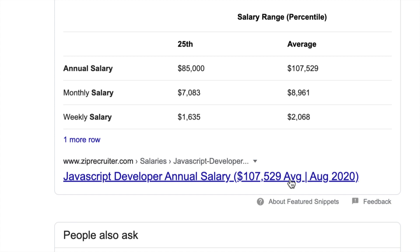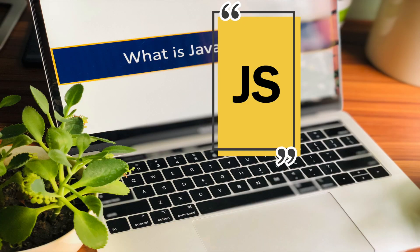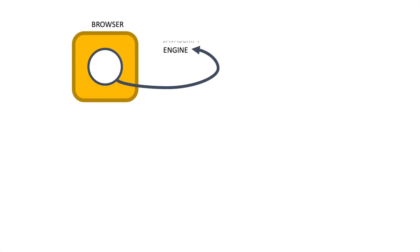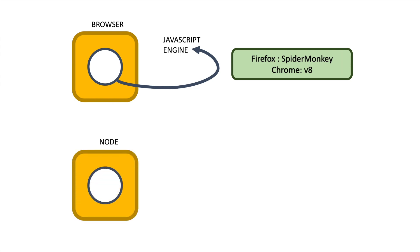Here we learn about the career perspective of JavaScript and the benefits. JavaScript can be the best choice for you. How does JavaScript run? In the browser, there is a JavaScript engine. For Firefox, the engine is SpiderMonkey; for Google Chrome, it is called V8. The JavaScript engine V8 is also embedded in the back-end, which is called Node.js.